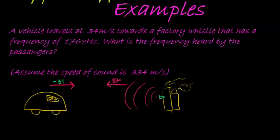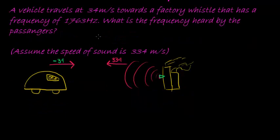Using the Doppler effect we want to know what is the frequency heard by the passengers. So our formula is the frequency observed equals C minus velocity of the listener divided by the velocity of the sound minus the velocity of the source, multiplied by the frequency of the source.